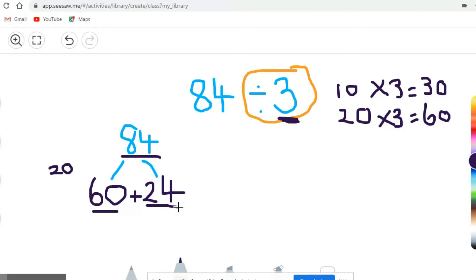What's the other number that I need in order to get my whole of 84? Good, 24. Now, if you know your 3 times table, how many times does 3 fit into 24? Let's count: 3, 6, 9, 12, 15, 18, 21, 24. How many times? 8. So now I can add my 10s and my 1s. So 20 add 8 is 28.